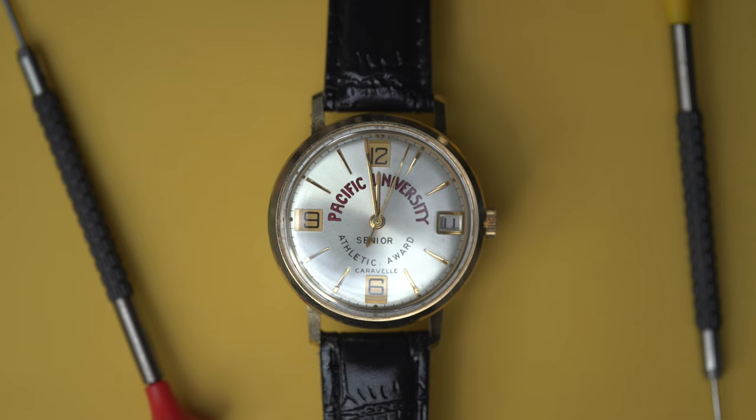Hello everyone, welcome back. Justin here from JSG Watches and this is video number three. Today we have a Caravelle from the 1970s with this nice style. It's got a Pacific University Senior Athletic Award on the front there. So this looks like it was a gift.